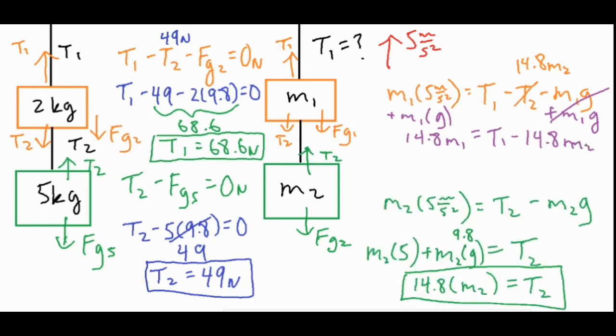So we can go ahead and rearrange that and solve for T1 by adding 14.8m2 to both sides, which means that T1 would equal 14.8m1 plus 14.8m2.